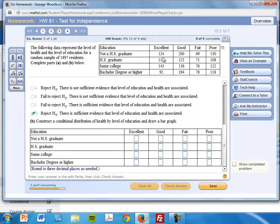I'm going to divide 124 by the total of that row. Then I'm going to divide 200 by the total of that row, 69 and 130. And that will tell me what percentage of people that are not high school graduates have excellent health, good health, fair health, poor health.